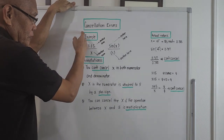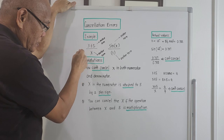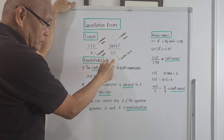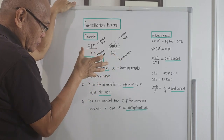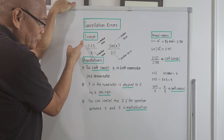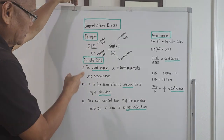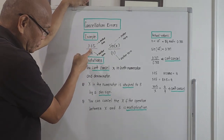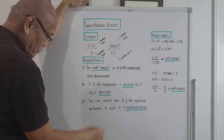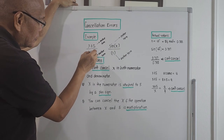Cancellation errors — I will give you example number one and number two showing why we cannot cancel these two expressions. Here, looking at the numerator and denominator, example number one is the fraction x plus 5 over x. We cannot cancel this x.